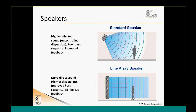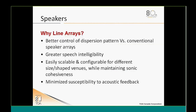Also, because sound waves are bouncing all over the place, you have more chance of feedback since sound tends to bounce right back to the microphone. A line array focuses on direct sound and minimizes vertical dispersion, giving tighter dispersion, improved bass and low-frequency performance, and minimized feedback issues. Key benefits include better dispersion control versus conventional speakers, increased speech intelligibility, easy scalability and configurability for different size and shape venues, and minimized susceptibility to acoustic feedback.